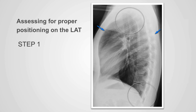To assess for proper positioning on the lateral x-ray, we take several steps. We make sure that the superior aspect of the lungs is identifiable and that the costo-vertebral angles are visible inferiorly. We make sure that the anterior aspect of the lungs extends to the chest wall anteriorly and to the ribs posteriorly. We make sure that the shadows of the arms and shoulders are not superimposed on the lungs. Here we can see one of the patient's humeri, which is positioned properly above the apices.